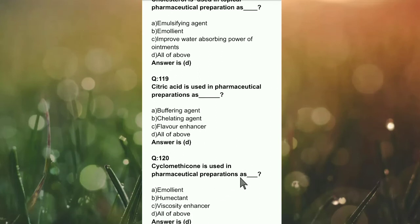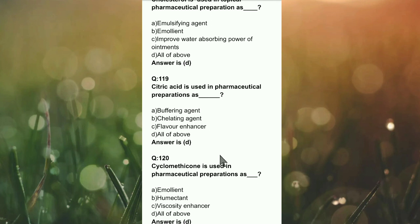Question number 120: Cyclomethicone is used in pharmaceutical preparations as emollient, humectant, viscosity enhancer, or all of the above? The right answer is D — all of the above. Hope you can easily understand all these MCQs.